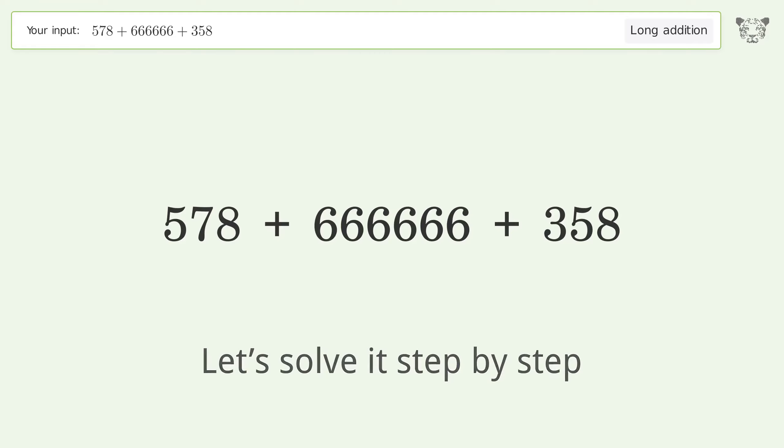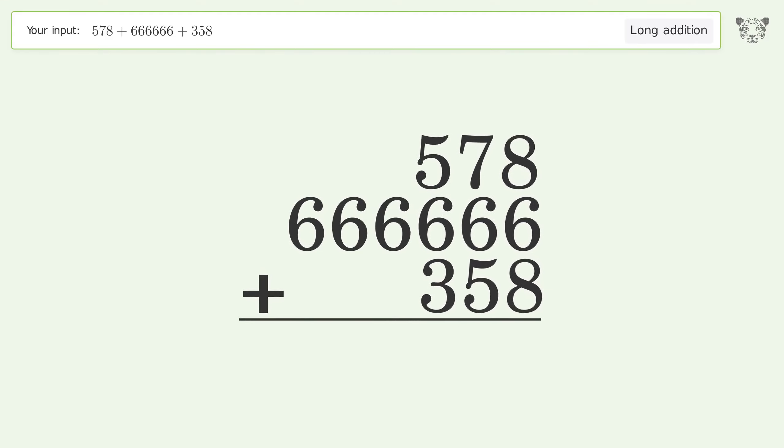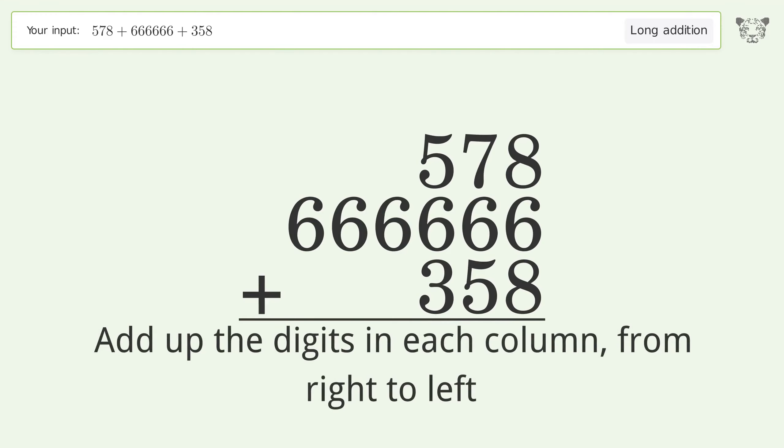Let's solve it step by step. Rewrite the numbers from top to bottom aligned by their place values. Add up the digits in each column from right to left.